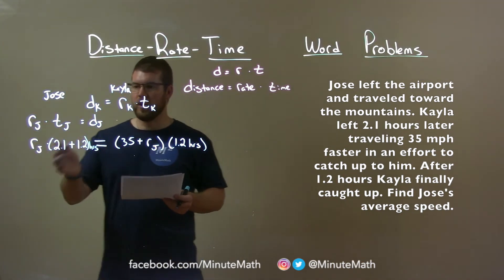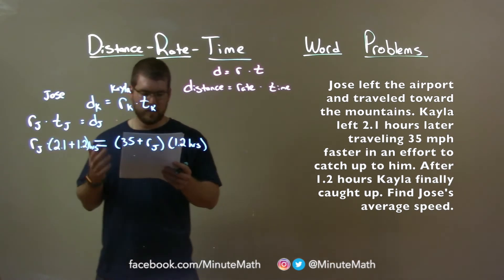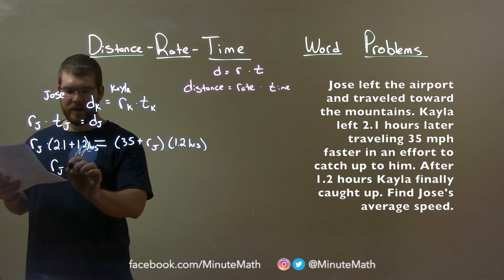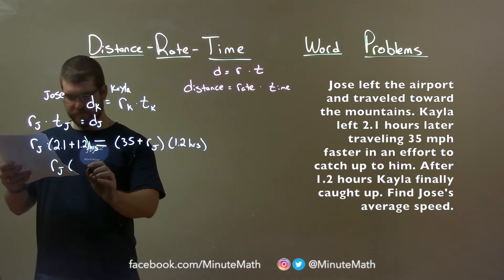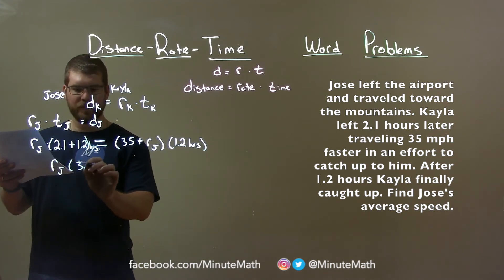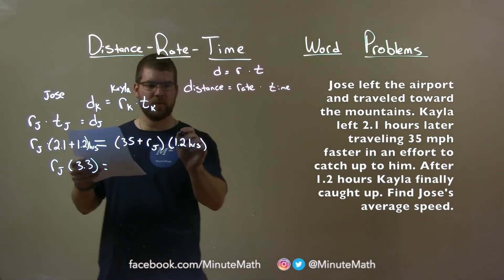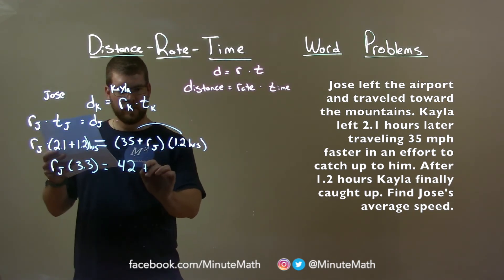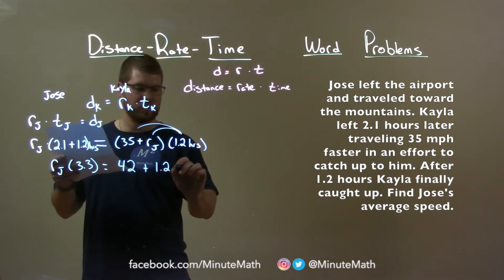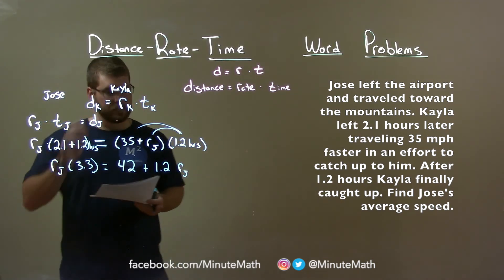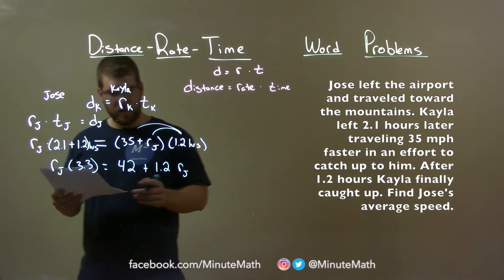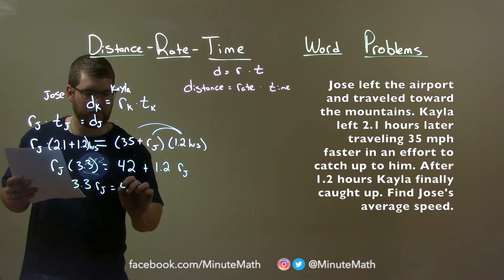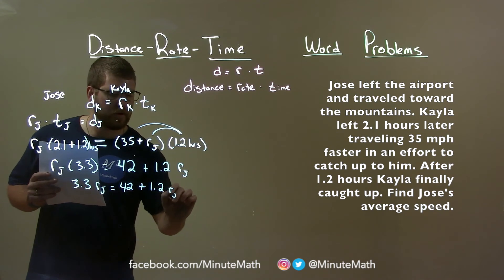Now we want to solve for RJ, the rate at which Josie was traveling, or his speed. We need to add these two up. So we have RJ times, 2.1 plus 1.2 is 3.3, equals, here we distribute the 1.2 hours: 35 times 1.2 is 42 plus 1.2 RJ. Rewriting this, 3.3 RJ equals 42 plus 1.2 RJ.